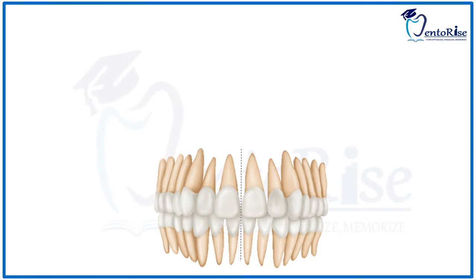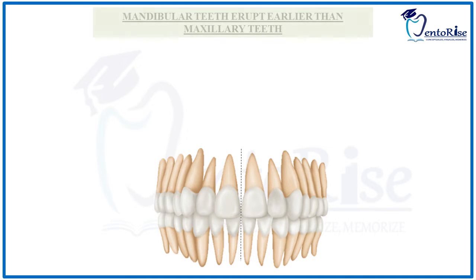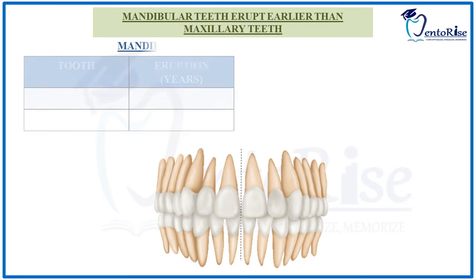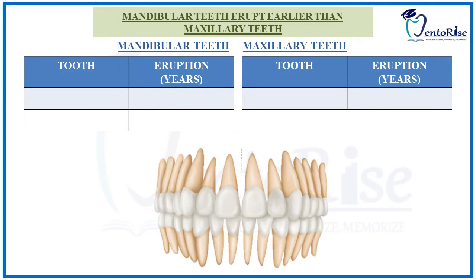Starting with the chronology of permanent teeth, we have to remember two thumb rules. Thumb rule number one: mandibular teeth erupt earlier than the maxillary teeth. Thumb rule number two: the first permanent tooth to erupt into the oral cavity is the first molar. Combining these two thumb rules, we can conclude that the mandibular first molar is the first permanent tooth to erupt, at 6 to 7 years of age.